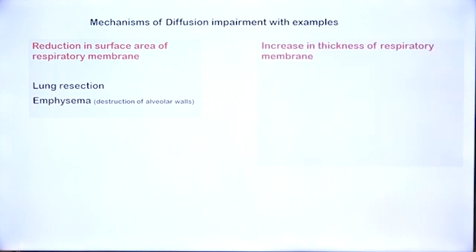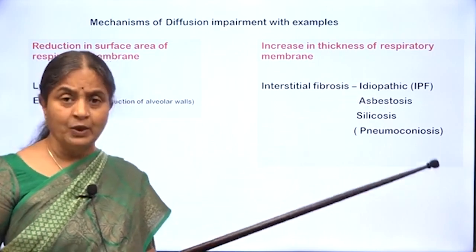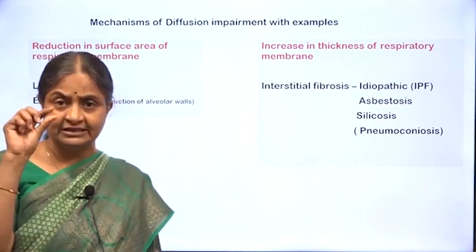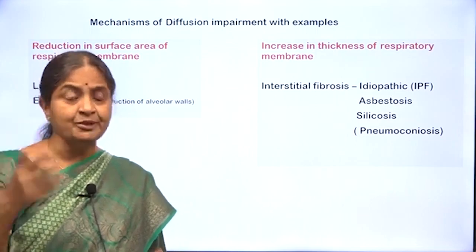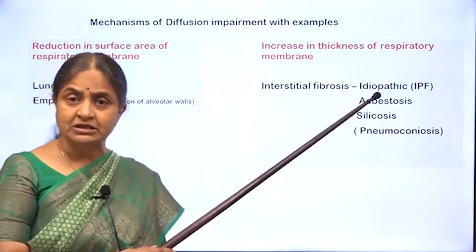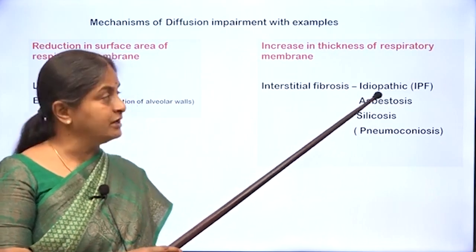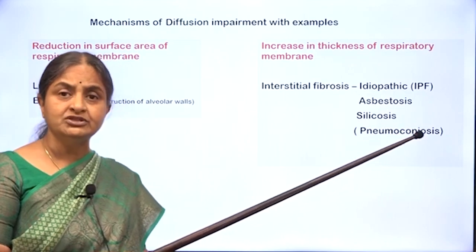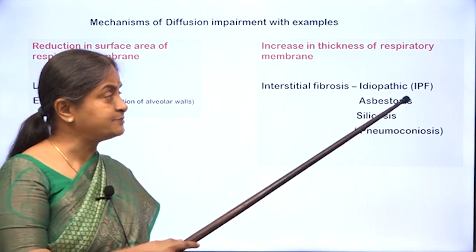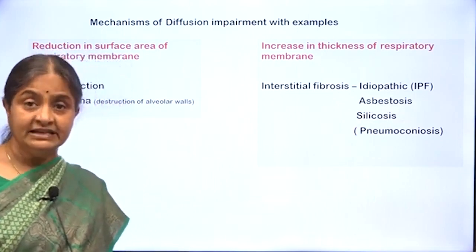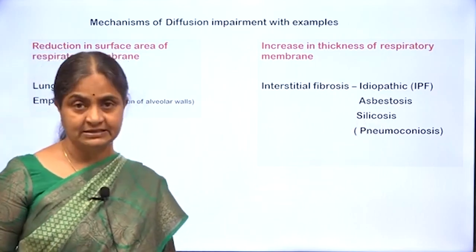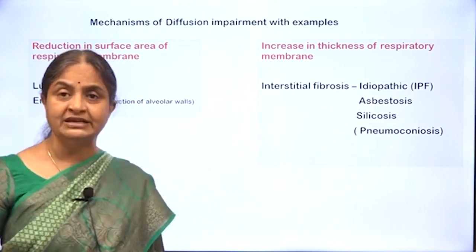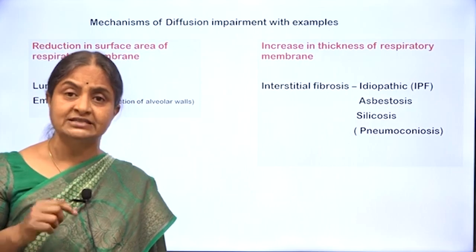What are conditions where there is an increase in thickness of the respiratory membrane? Interstitial fibrosis, where the interstitium between the alveolar epithelium and the capillary endothelium — the pulmonary interstitium — is thickened. If the fibrosis is not due to any known cause, we call it idiopathic pulmonary fibrosis. A set of conditions called pneumoconiosis involves fibrosis due to dust particles — for example, in asbestosis, inhaled asbestos fiber initiates fibrosis, and in silicosis, silica dust from construction workers initiates fibrosis in the lung.